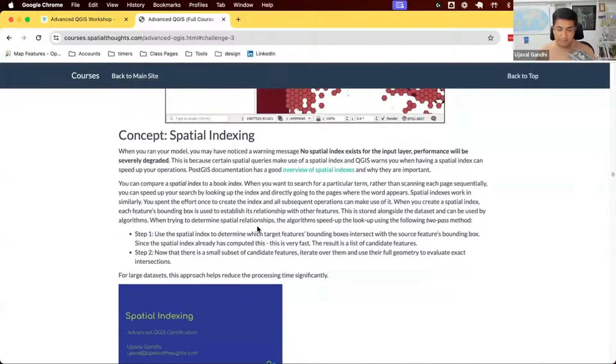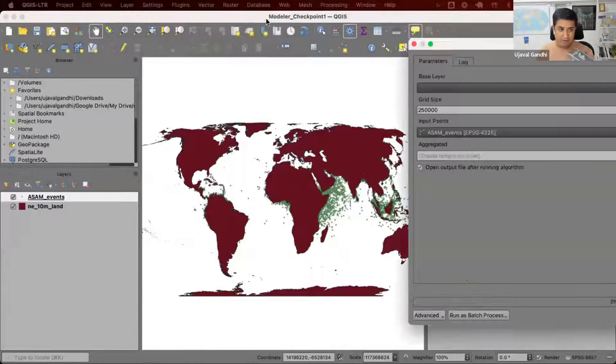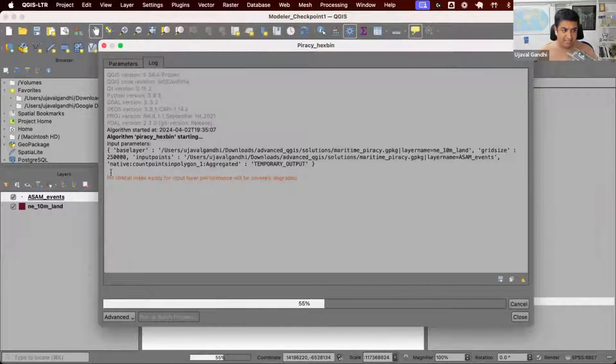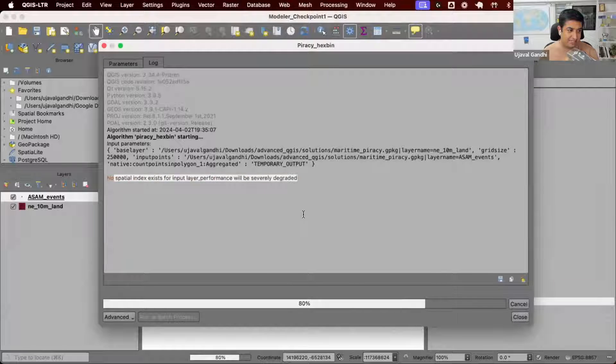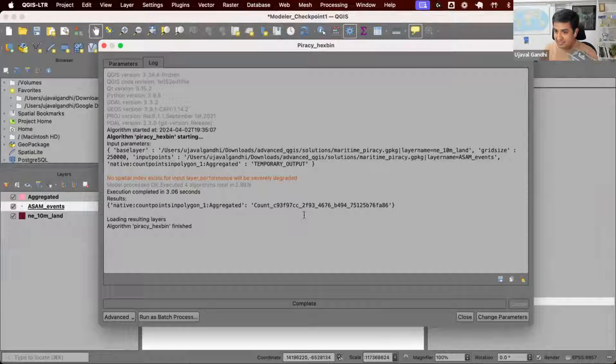Let's learn about this concept of spatial indexing. When we run the model, the model is able to run, but while we are running the model, we get this error. No spatial index exists for input layer. Performance will be severely degraded. Now, this is a very ominous looking warning.